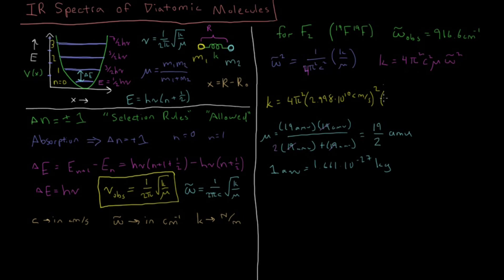So plugging in the reduced mass up here, we're going to get 19 over 2 is 9.5 times 1.661 times 10 to the minus 27th kilograms. And then that is also times continuation of this line, this 916.6 inverse centimeters. And we note that we have the correct units because we're going to have a centimeter squared here. We're going to have centimeters to the minus squared here. So those are going to cancel out. That's good.